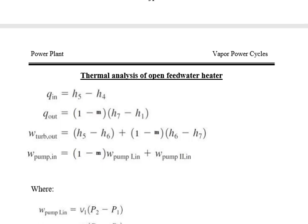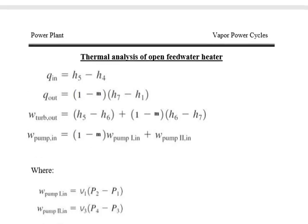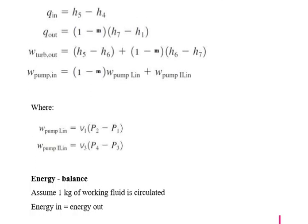The pump work input is W_pump1 plus W_pump2, where W_pump1 equals V1 times (P2 minus P1), and W_pump2 equals V3 times (P4 minus P3). These are the energy balance equations. Two pumps provide the work input to the cycle.